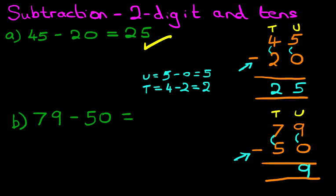Now the tens column. What is 7 minus 5? 7 minus 5. Well, you should know this. 7 minus 5 is 2. And we have our answer. 79 minus 50 is 29. And that is correct.